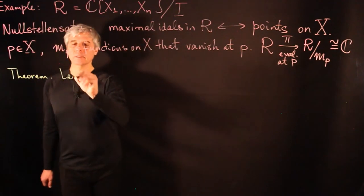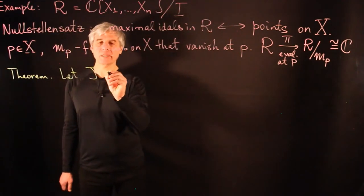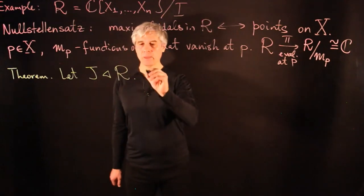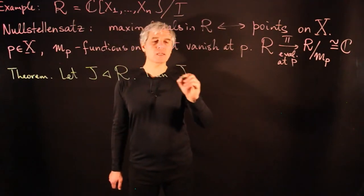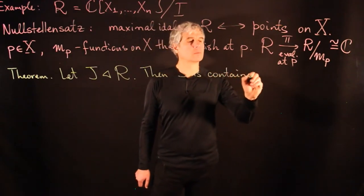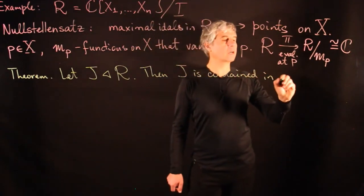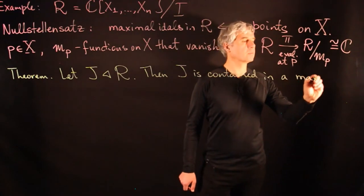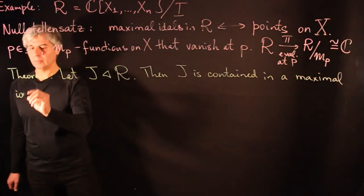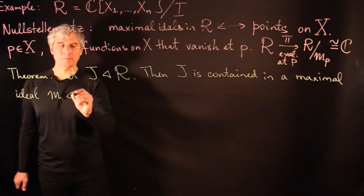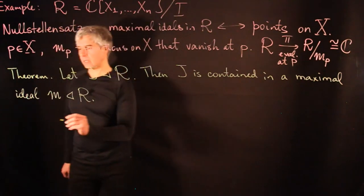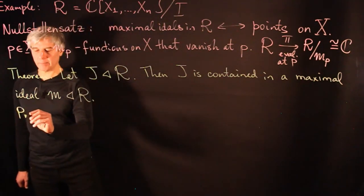We state the following theorem: let J be an ideal in a domain R. Then J is contained in a maximal ideal M in R. The proof of this theorem is based on Zorn's lemma.